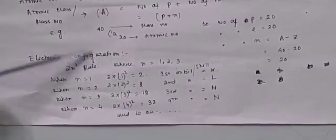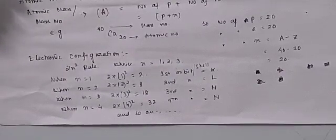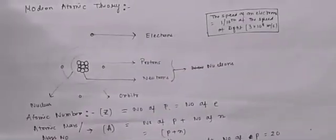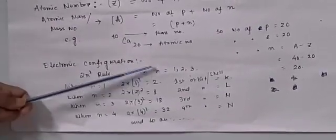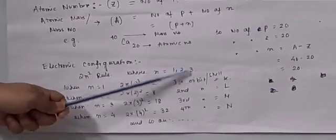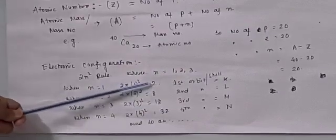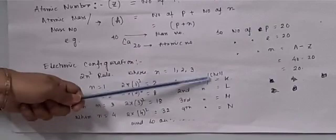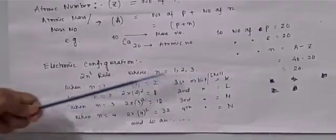Next is electronic configuration. What is electronic configuration? It describes how the electrons are arranged in all these orbits or shells. There is a rule known as the 2n² rule, where n is any integer 1, 2, 3. By putting the value of n: when n equals 1, we get 2 into 1², which is 2. So the first shell, or K shell, will always contain a maximum of 2 electrons.